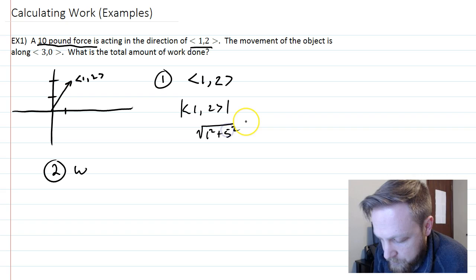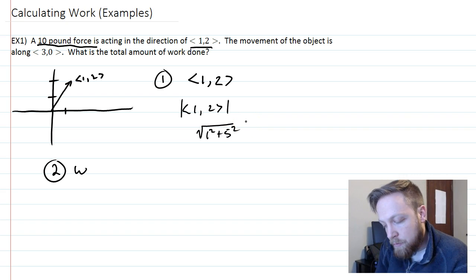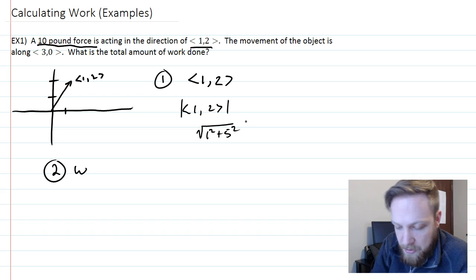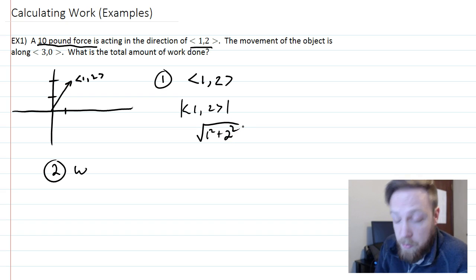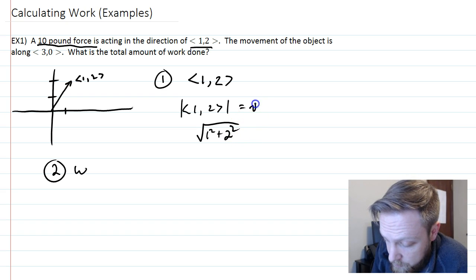To do the unit vector, we figure out the magnitude of <1,2>, which we already did, but it would be 1² + 2², which is the square root of 5.